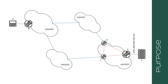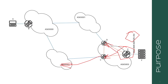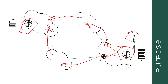It seems simple: all we need is for E to advertise 100::/64 to D and C, C to advertise it to AS65002, D to advertise it to AS65001, which then causes it to reach B, allowing B to find the forwarding information to reach the destination.